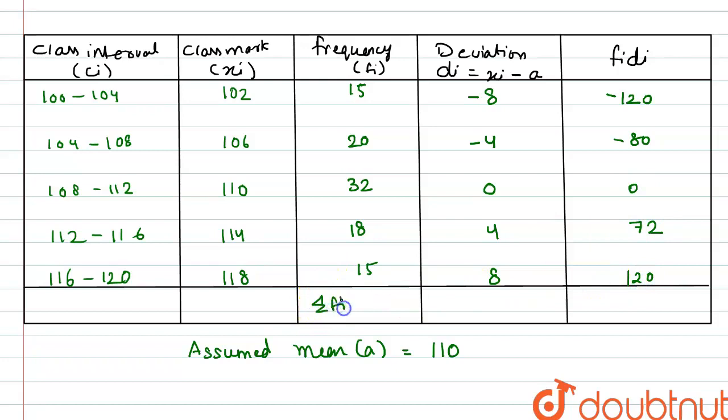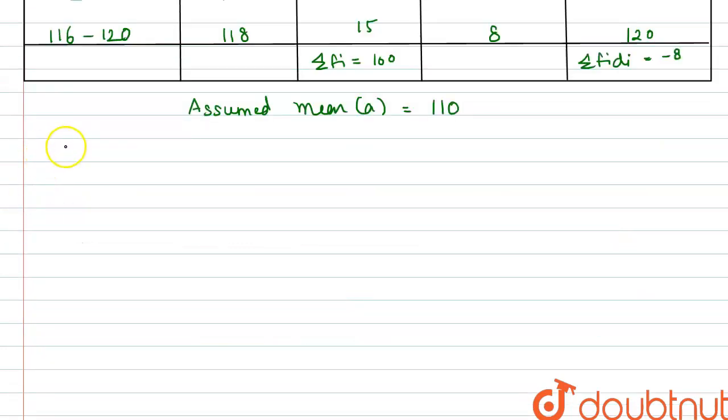We have the summation of fi, that is 100, and we have the summation of fi di, that is minus 8. Now we have to find the mean number of seats. Mean, x bar, is equal to a plus summation of fi di divided by summation fi.